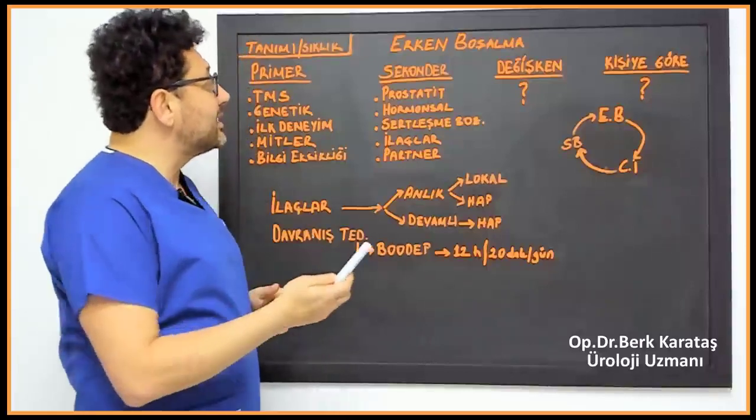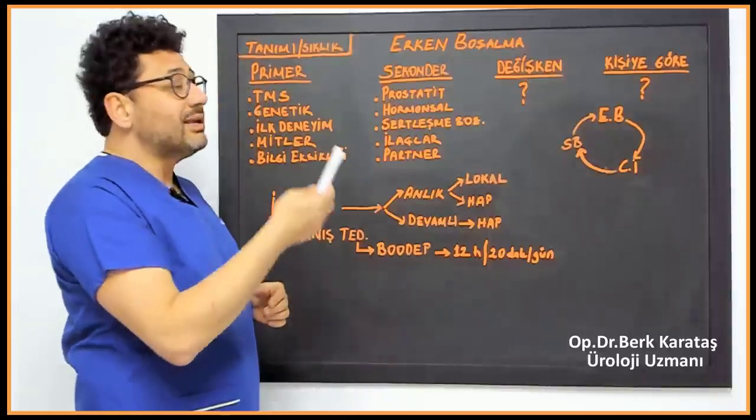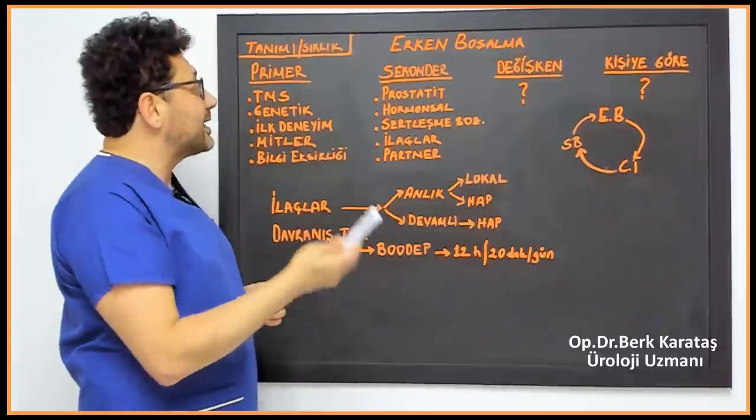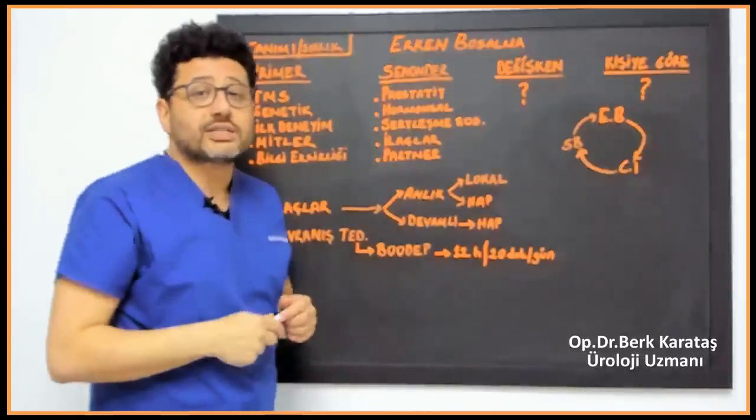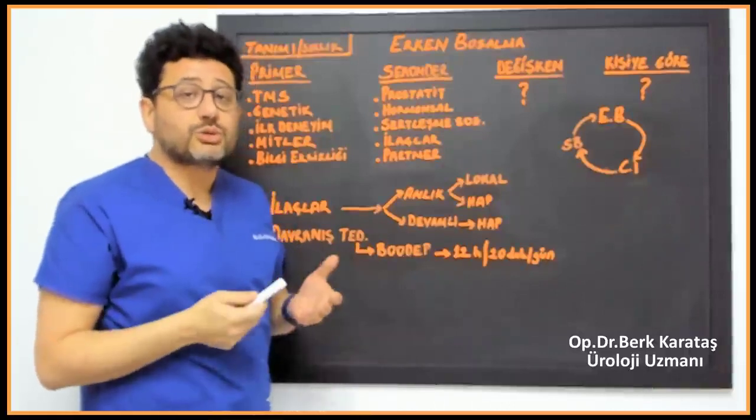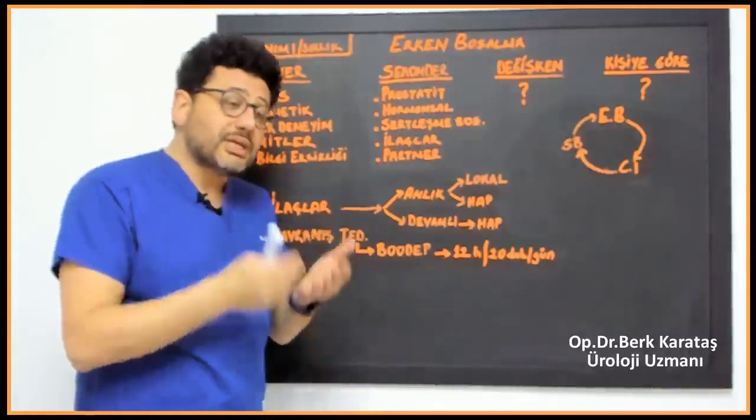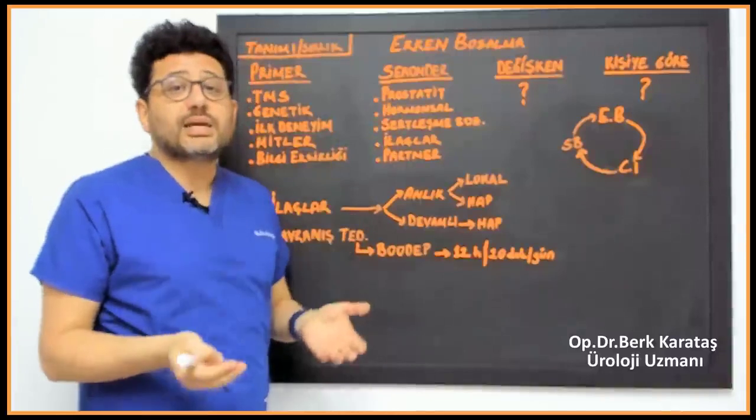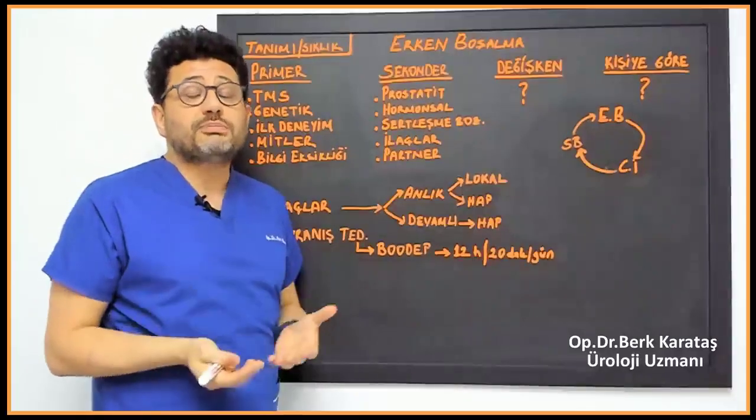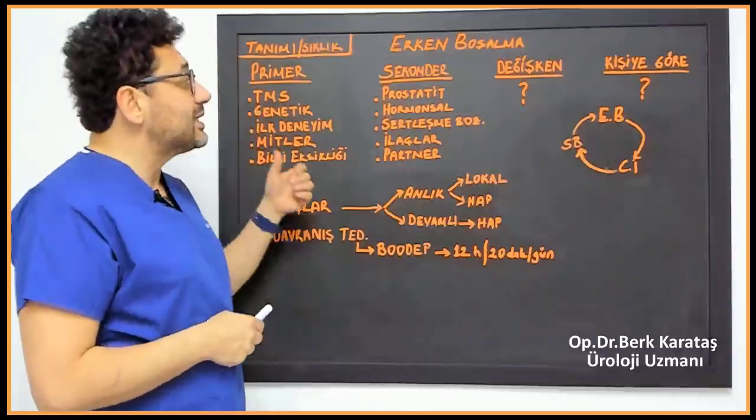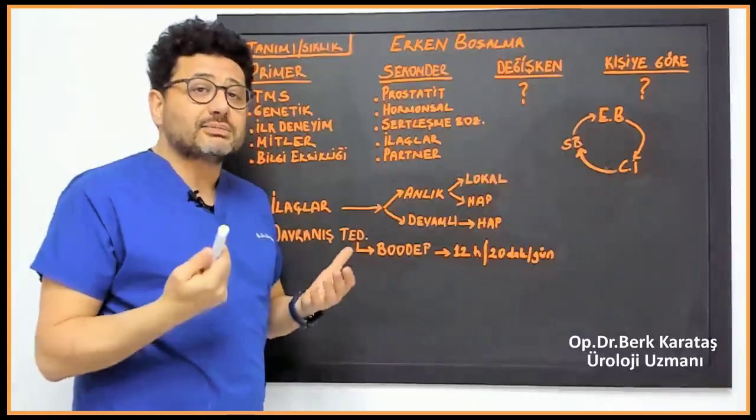If a person who has been married for 10 years has been ejaculating prematurely for 10 years, there is no need to do any examinations or hormone research. Because that person has had a disease for 10 years, for example prostatitis, and the only symptom cannot be premature ejaculation. Or you have had thyroid disease for 10 years and the only symptom is not premature ejaculation. Therefore, there is no need to examine and research.